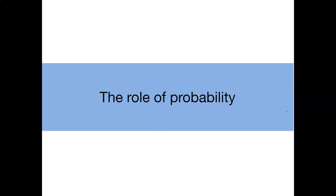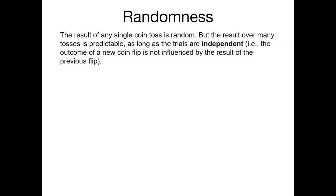The first concept we need to understand is randomness. Think about tossing a coin. Any single result of a coin toss is random, but we can think about what the outcomes of those coin tosses are over many tosses. If these trials are independent — that is, the outcome of a new coin flip is not influenced by the result of a previous flip — that's important for us to know in probability.